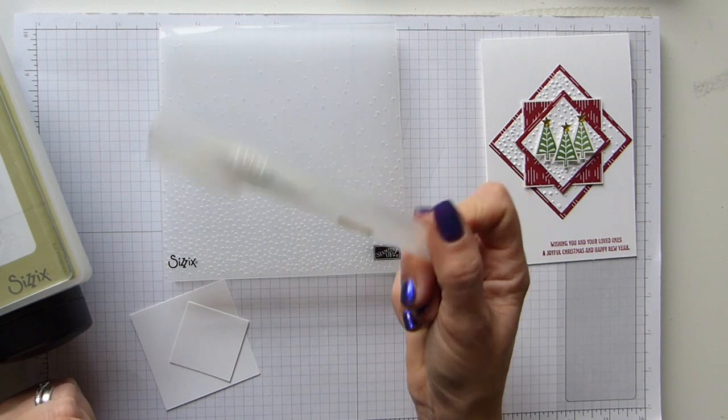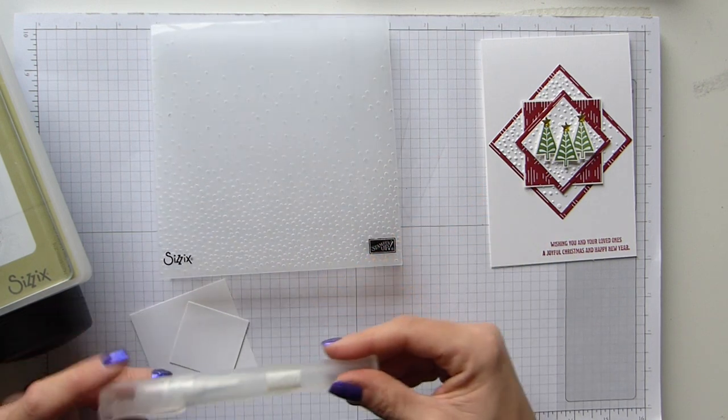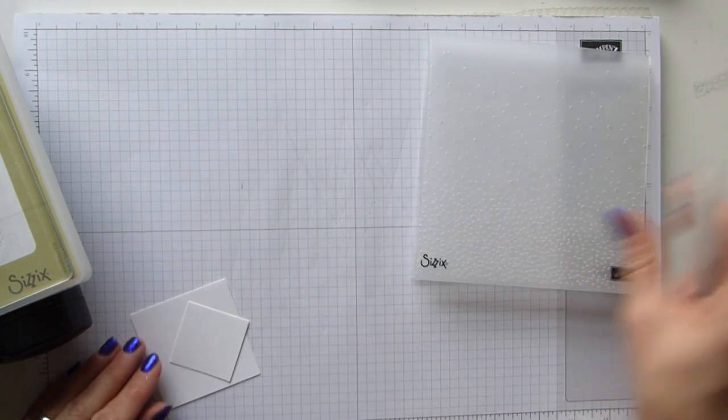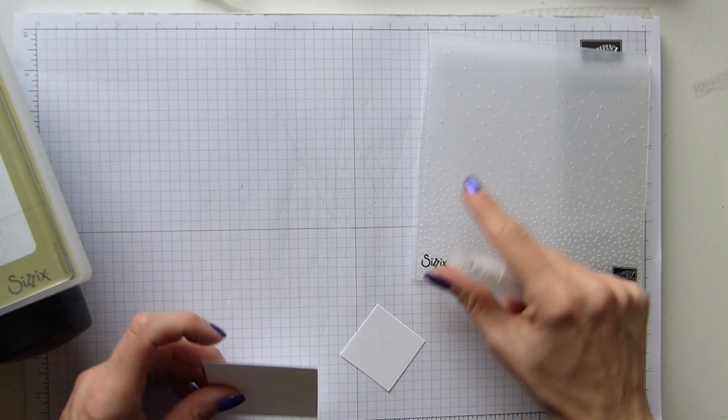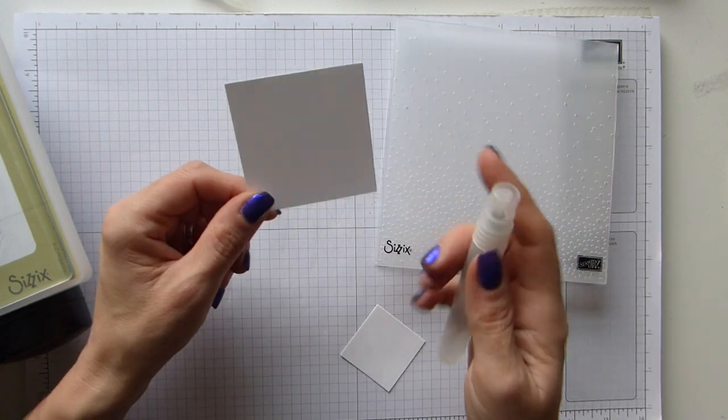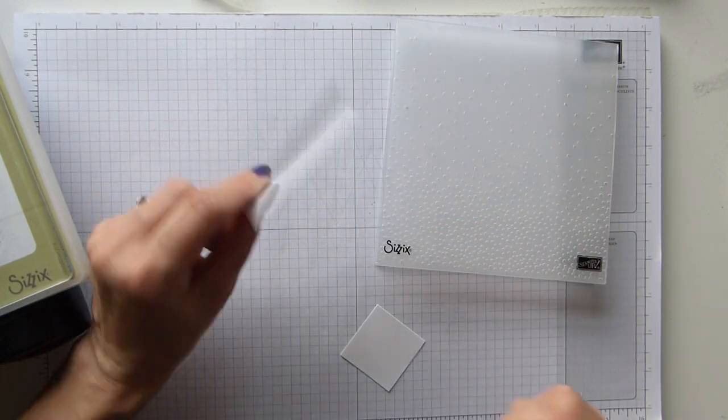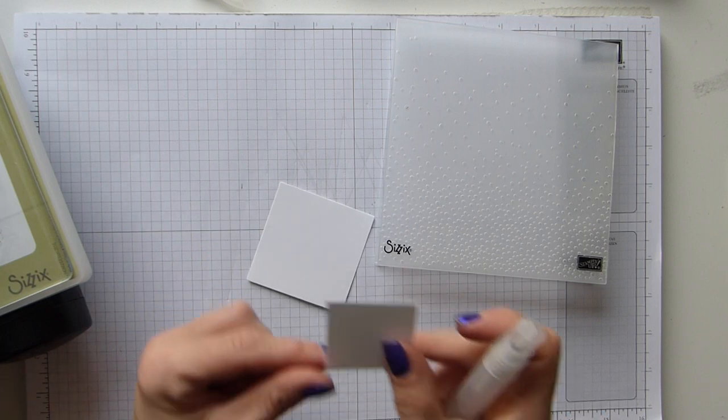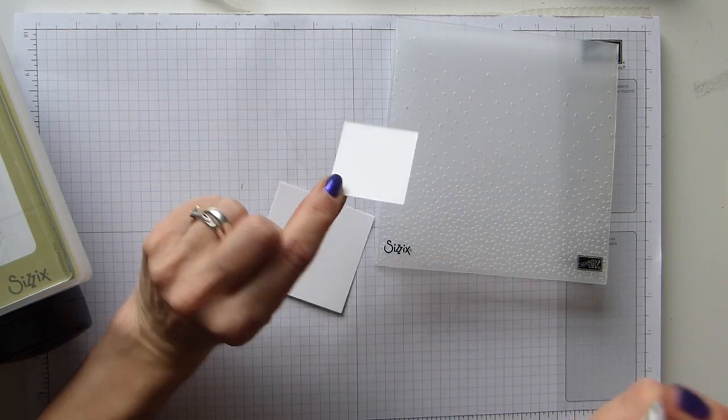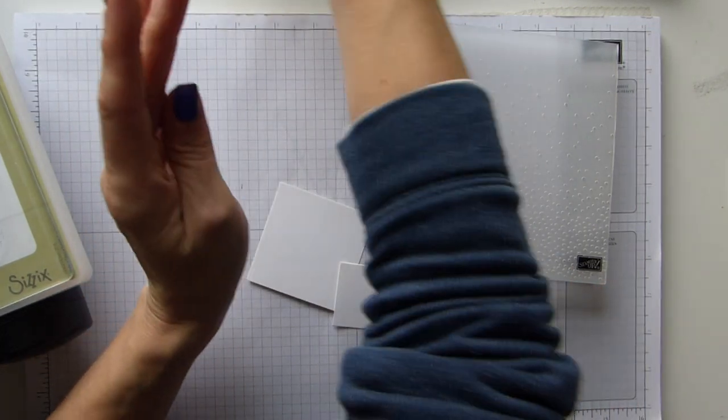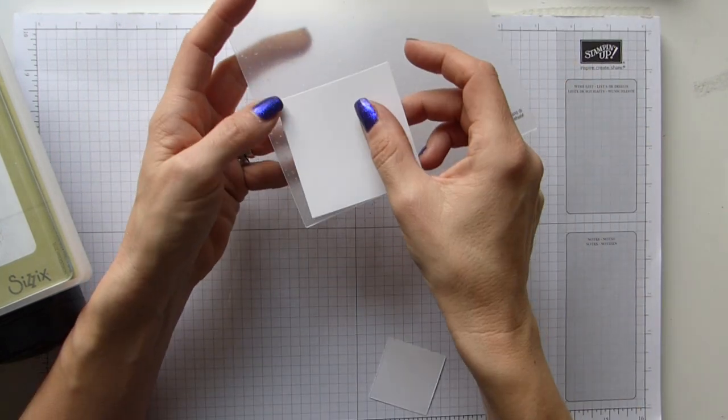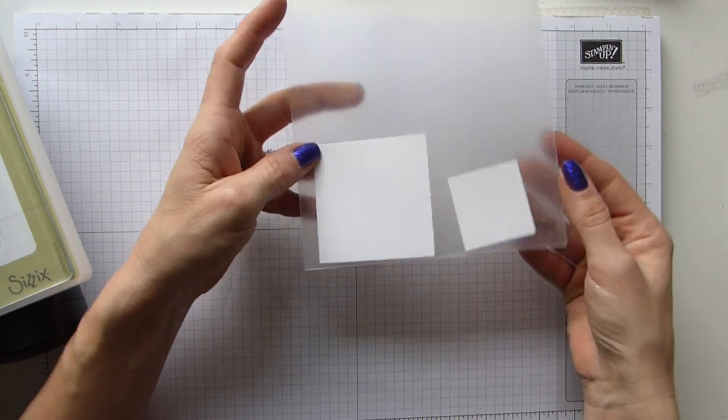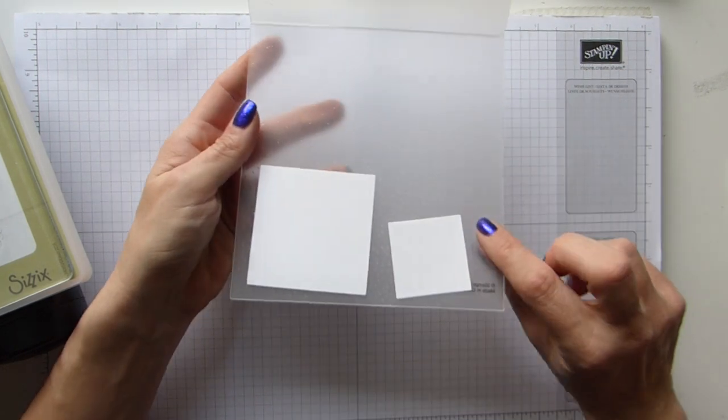And again, as with all my dry embossing, I always spritz my card before I start. It just helps to stop the card from cracking and it just makes it a little bit softer when it goes through the embossing folder. And I just simply spray either side with just a mist of water. And I want this thicker part of the pattern, so I'm simply going to put both of them in at the bottom.